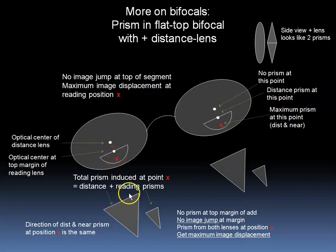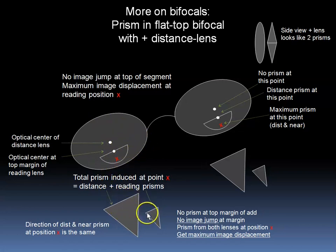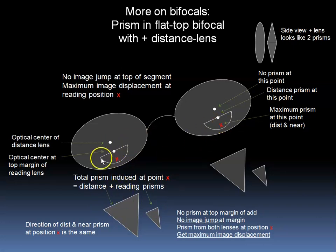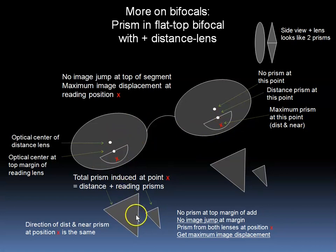Here we show two plus lenses — the distance and the near lens — both with base-up prism that add to each other. However, if both eyes are the same, this shouldn't be too much of a problem unless the number is very high.